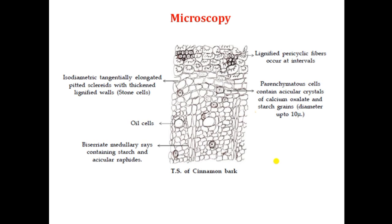It shows the presence of acicular crystals of calcium oxalate and starch grains — both are very important. Acicular crystals of about 10 micrometers are present. Oil cells are present, which contain volatile oil. Under it come the medullary rays, which are arranged radially and are either uniseriate or biseriate in nature. Both uniseriate and biseriate medullary rays are there, and they also contain starch grains and acicular raphides.